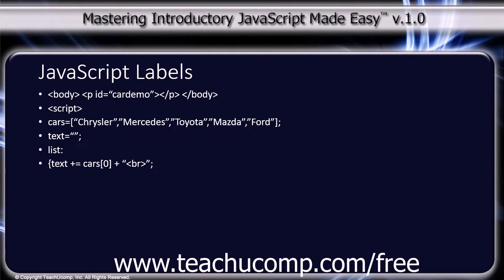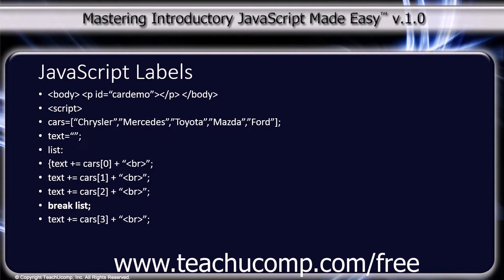Inside the label block, we build up the text variable: text plus equals cars[0] plus line break tag semicolon; text plus equals cars[1] plus line break tag semicolon; text plus equals cars[2] plus line break tag semicolon. Then a break statement referencing the list label to exit after the first three items. Close curly bracket.